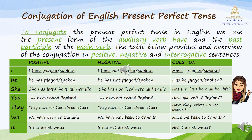Conjugation of English Present Perfect Tense. To conjugate the present perfect tense in English, we use the present form of the auxiliary verb 'have' and the past participle of the main verb. The table below provides an overview of the conjugation in positive, negative, and interrogative sentences. Para conjugar el presente perfecto en inglés, usamos la forma presente del verbo auxiliar 'have' y el participio pasado del verbo principal. La siguiente tabla proporciona una descripción general de la conjugación en oraciones positivas, negativas e interrogativas.